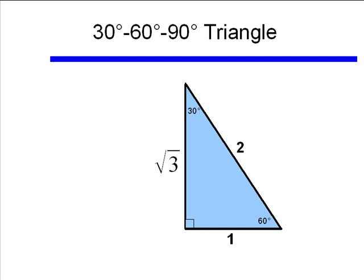Even though it looks like the 3 is bigger than the 2, because we have that square root sign, square root of 3 is smaller than 2, so the hypotenuse again is the longest side.